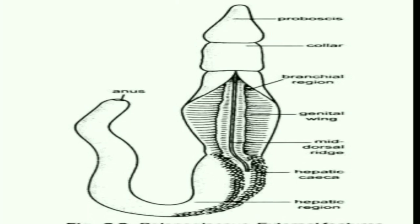The trunk is the posterior-most part with three regions: the branchiogenital region, middle hepatic region, and posterior abdominal region. The branchiogenital region contains gills and gonads. The branchial region contains rows of gill pores or branchial apertures, and the number of gill pores increases as the animal grows. In some species the genital regions are very prominent and called genital wings.